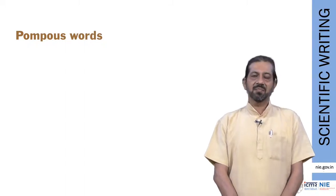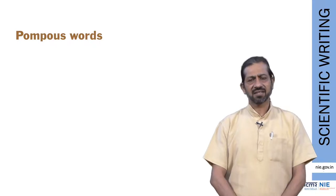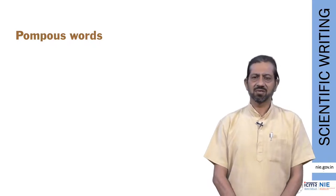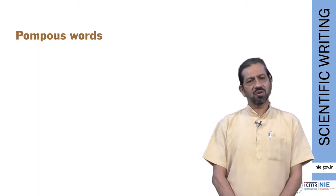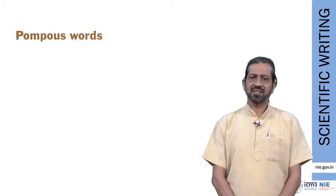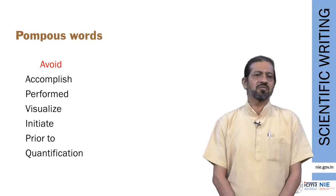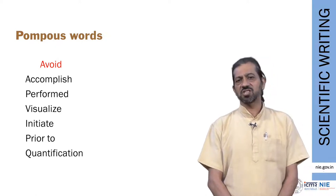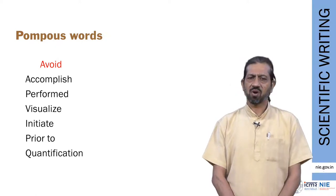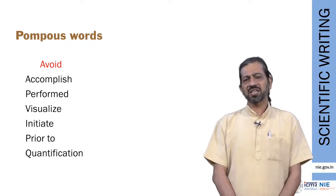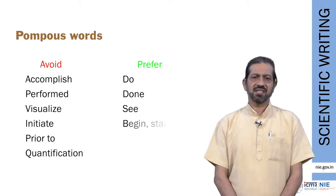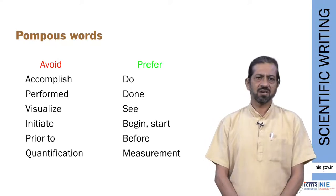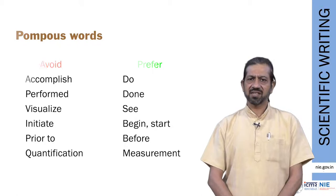Another way to make our writing simple is to avoid pompous words — words that seem unnecessarily big or fancy. For example, words like accomplish, performed, visualize, initiate, prior to, quantification could be replaced by much simpler words such as do, see, and so forth.